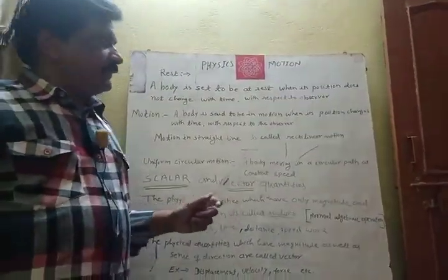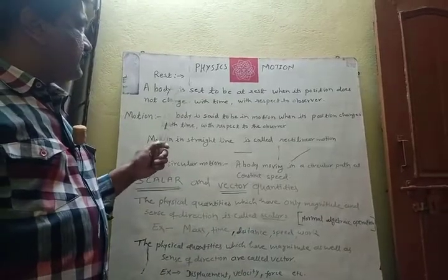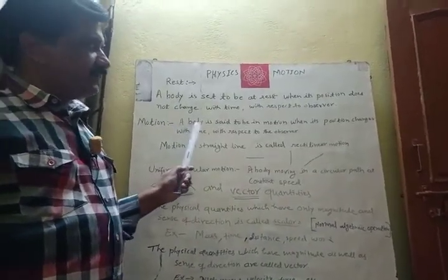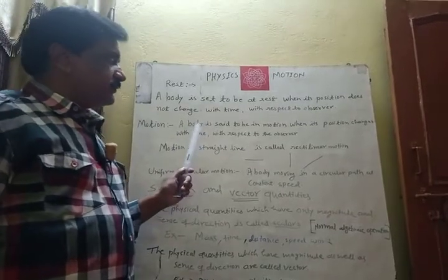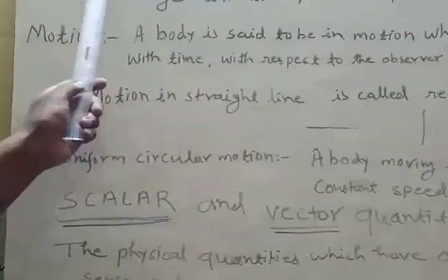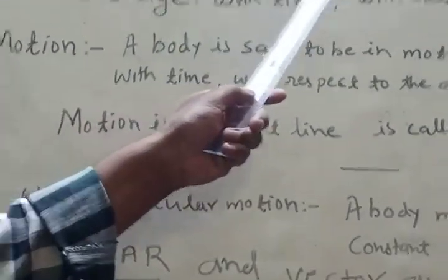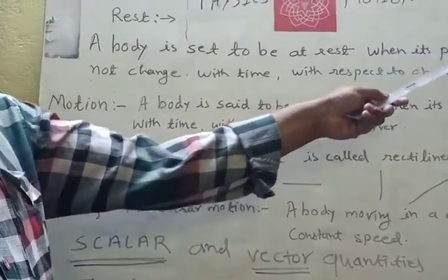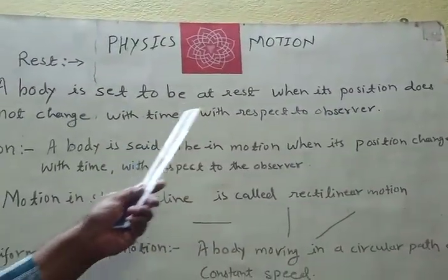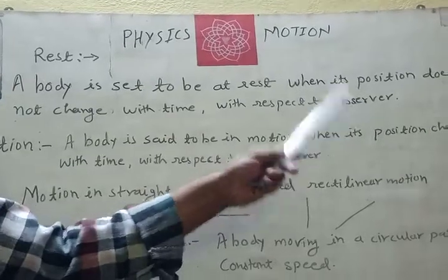As I already told you, we will see the definitions of rest and motion. In the previous lecture, we have learned about how to define. Now, here is the definition: a body is said to be at rest when its position does not change with time with respect to observer.